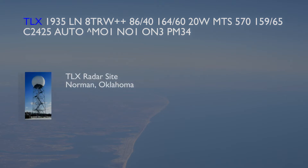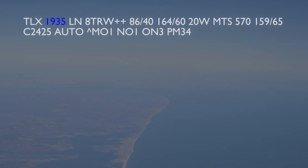The first item is the three-letter identifier of the radar site generating the report. In this case, the report was generated by the radar in Norman, Oklahoma. Next is the Zulu time of the report. This report reflects the weather that existed at 1935 Zulu time.